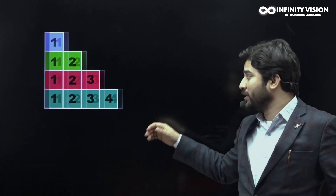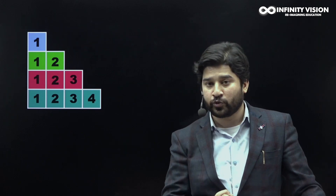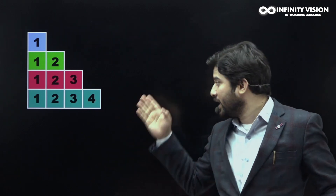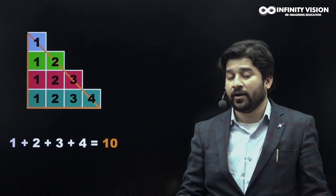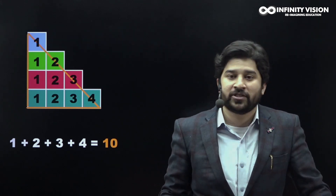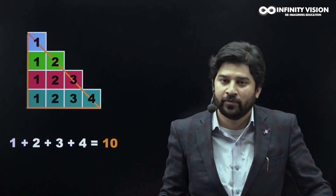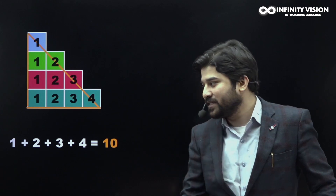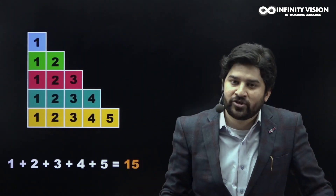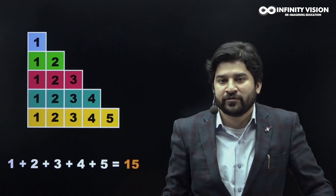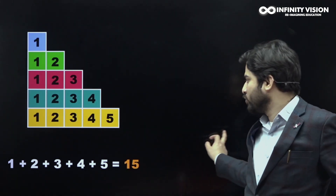In the same way, we are going to build the fourth triangular number by adding four more squares. It would look something like this, and we call 1 plus 2 plus 3 plus 4 equals 10 our fourth triangular number. In the same fashion, 1 plus 2 plus 3 plus 4 plus 5 is our fifth triangular number, which is equal to 15.